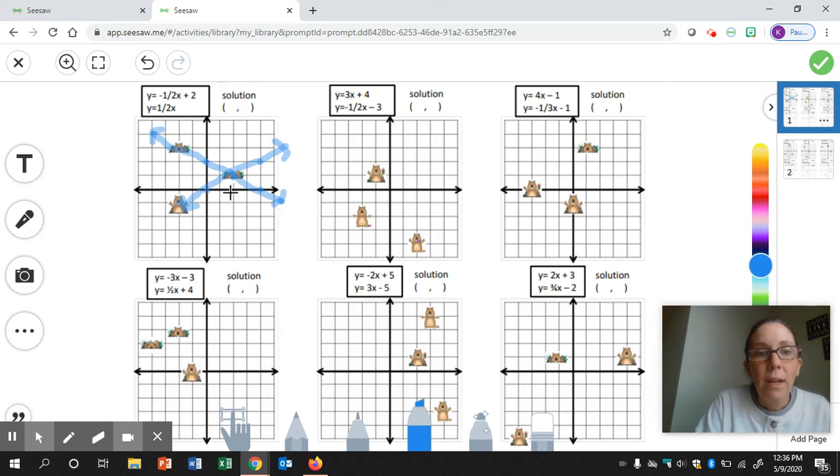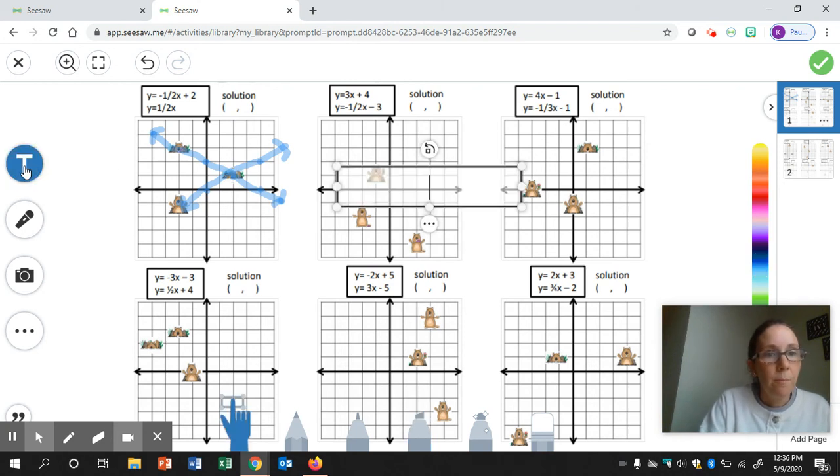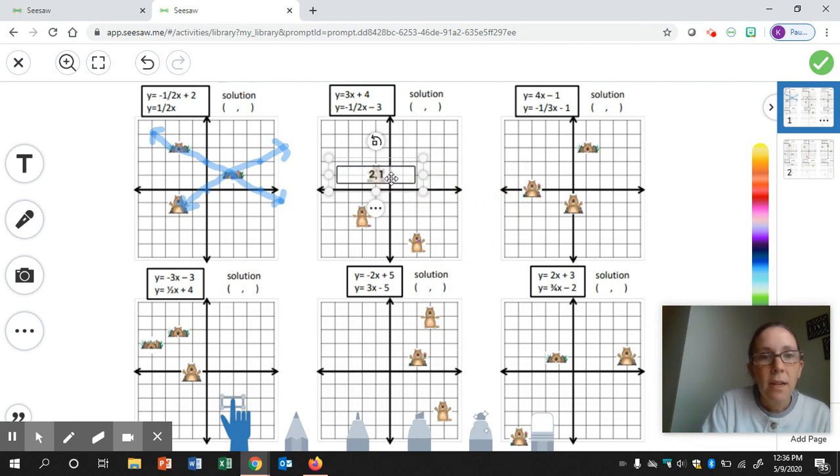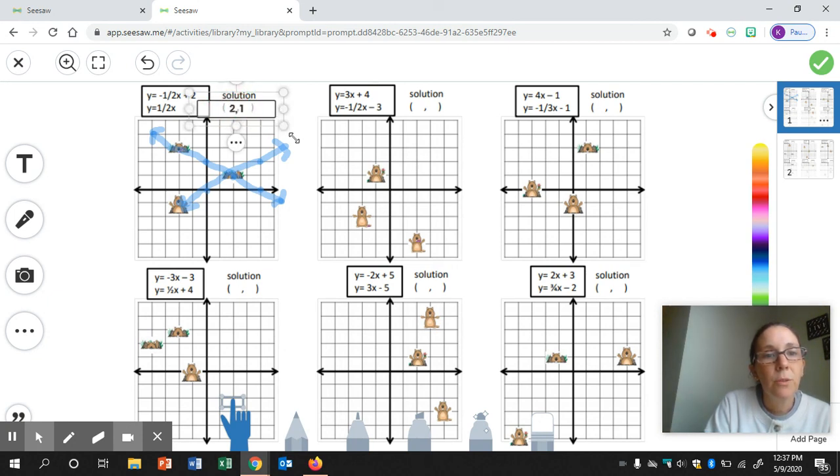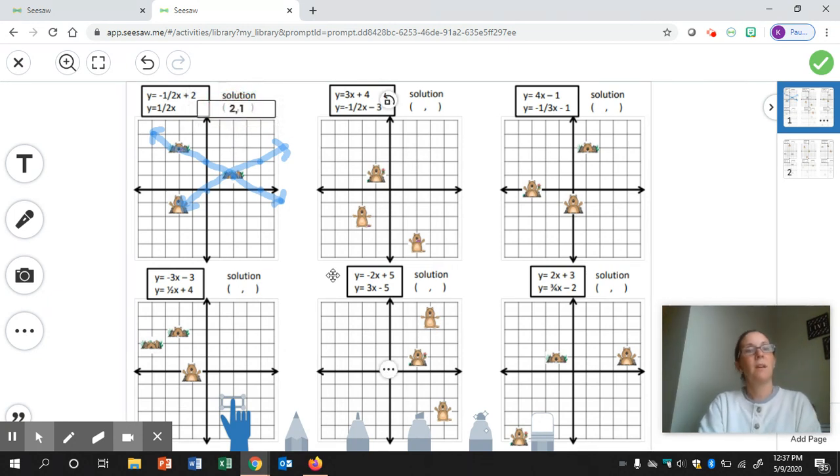So that coordinate is right two, up one. So the solution is two comma one. You're going to select the label tool, the T. Your text box pops up right here. I'm going to write two comma one. Then you're going to make sure you have the move tool selected down here at the bottom. You can make it a little bit smaller and then drag it over there to the solution for the first system of equations. So the solution is the ordered pair, the place on the graph where the two lines intersect.